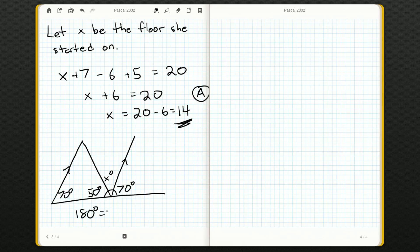But now at least this 50 degrees, x degrees, and the 70 degrees, they form a line, and a line has 180 degrees in it. So we know that the whole line, 180 degrees, must be the sum of these angles.